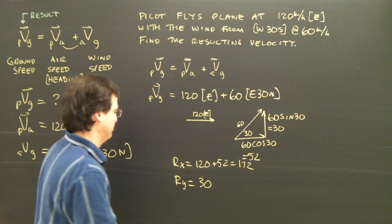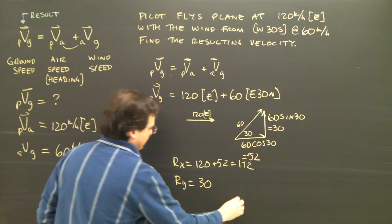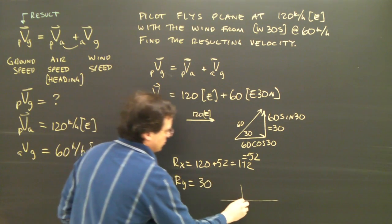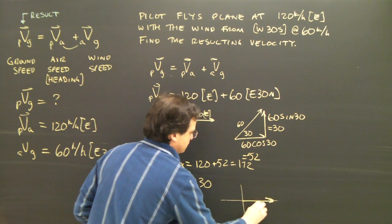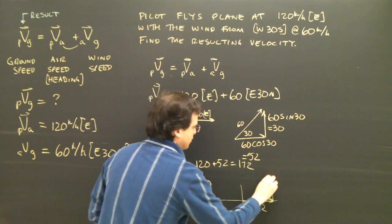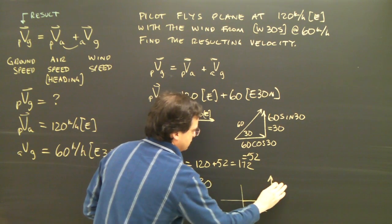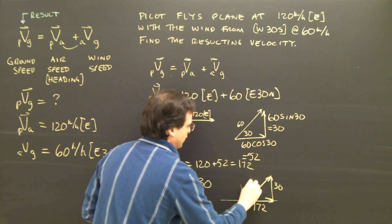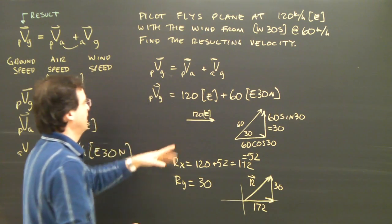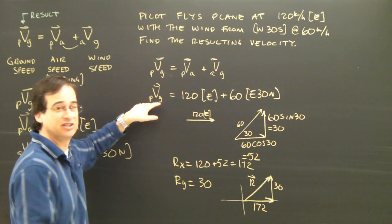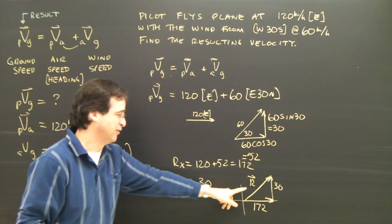Let's add those up. So I'm going to draw x and y. x is 172. y is 30. So there's my resultant. And in this case, the result of this plus this is equal to the velocity. So I have to find that resultant.